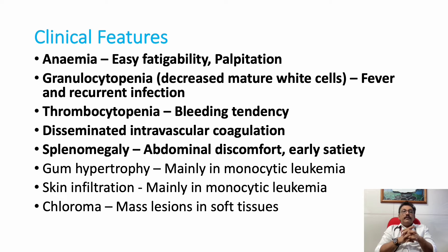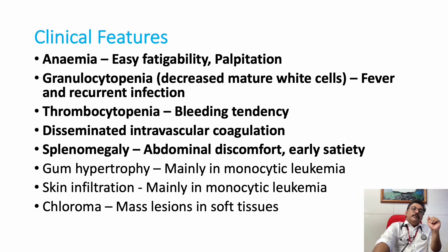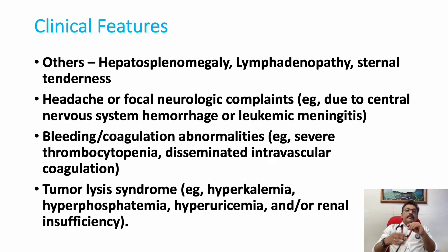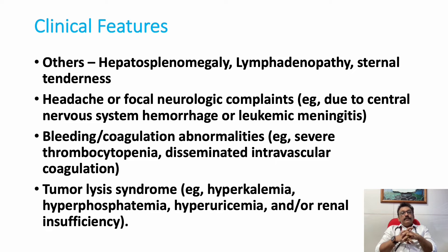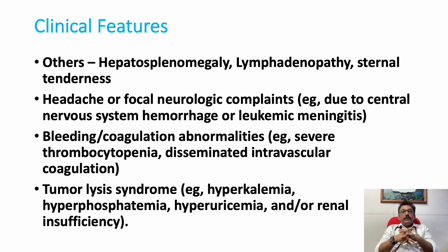Gum hypertrophy is a very important feature of monocytic leukemia. Skin infiltration is also seen in monocytic leukemia. Chloroma is a mass lesion in the soft tissues — an unusual finding in leukemia, but gum hypertrophy is very common. Hepatosplenomegaly and lymphadenopathy are common in most hematological disorders. Sternal tenderness is a very important finding because the abnormal production of cells stretches the bone marrow periosteum, producing tenderness.